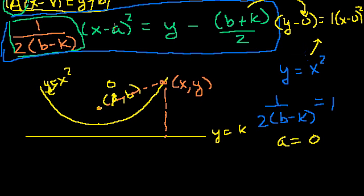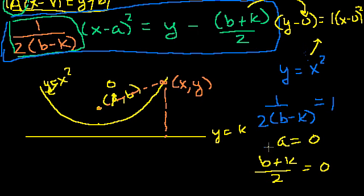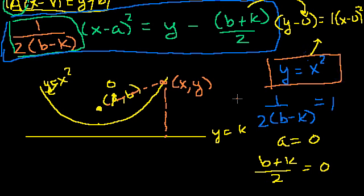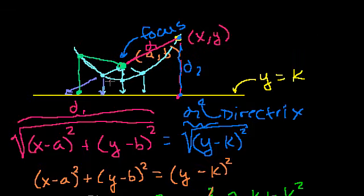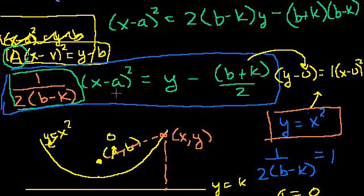If this curve is y equal to x squared, then a is 0. And b plus k over 2 — which is the y-offset — is going to equal 0, so b plus k over 2 is equal to 0. And now we should be able to use this information to figure out the actual coordinates of the focus and the directrix of the classic parabola y equals x squared.